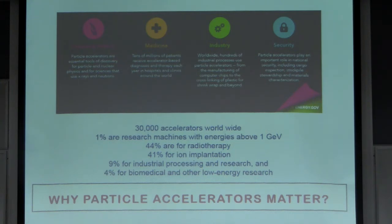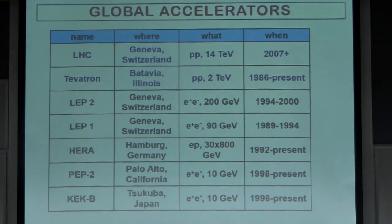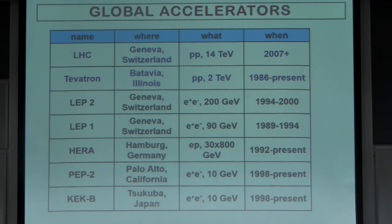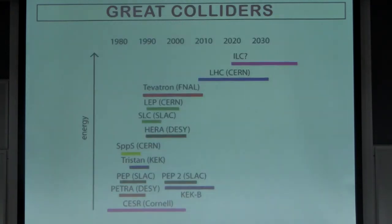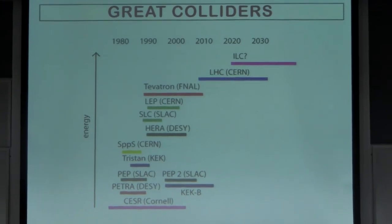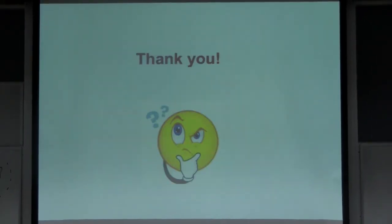Particle accelerators have many applications. This table gives the list of a few of the major global accelerators, which can accelerate charged particles to energies from GeV up to 14 TeV — with the LHC at number one, in operation for the last ten years. Here is an arrangement of nuclear accelerators based on energy and the era in which they came into operation. Thank you very much for your patience — I hope you learned something new today.